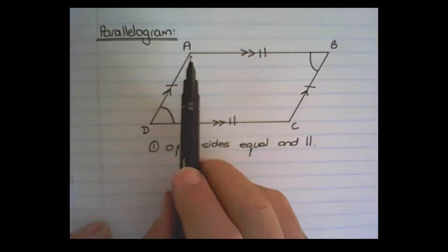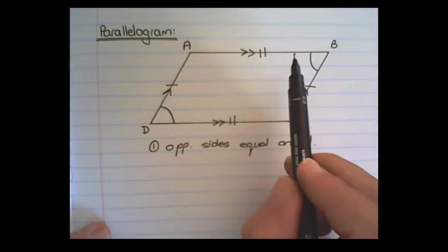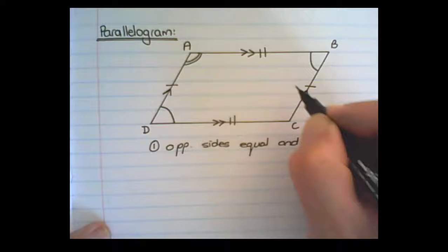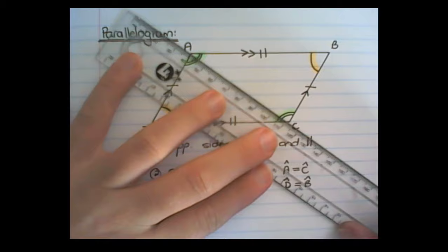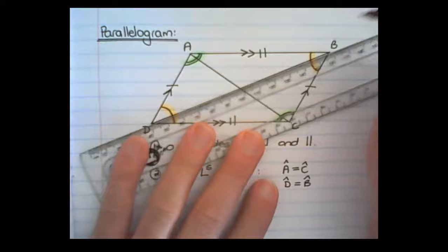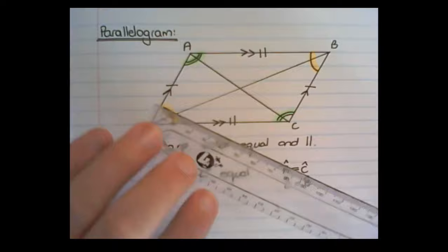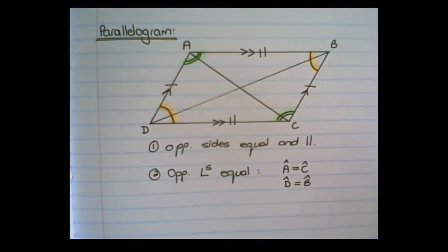Meaning if I have a parallelogram ABCD, angle D would be equal to angle B, and angle A would be equal to angle C. Now if I draw a diagonal and another diagonal, they are not equal in length — the one diagonal is shorter than the other. But what the diagonals do is they bisect each other, meaning they cut each other in half.